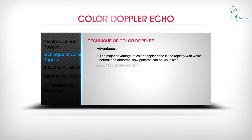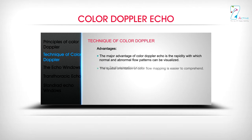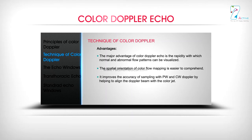The major advantage of color Doppler echo is the rapidity with which normal and abnormal flow patterns can be visualized. The spatial orientation of color flow mapping is easier to comprehend. It also improves the accuracy of sampling with PW and CW Doppler by helping to align the Doppler beam with the color jet.